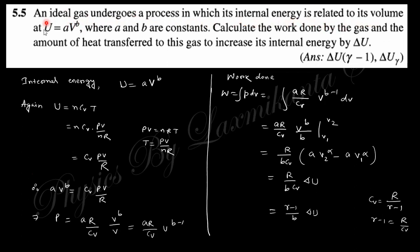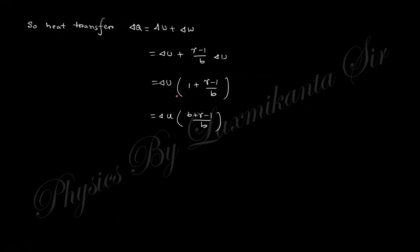Question 5: An ideal gas undergoes a process where its internal energy is related to its volume. Given U as a function of V, express it using U = nC_v dT, so dV relates to dT through nC_v dT/dV = nr, giving C_v·pV/R = U. Comparing this gives an expression for p. Work done = ∫p dV is then calculated. Note: there is an error in this solution — a factor of b is missing in the answer. This will be corrected in the upcoming Roy-Gupta solution lecture.